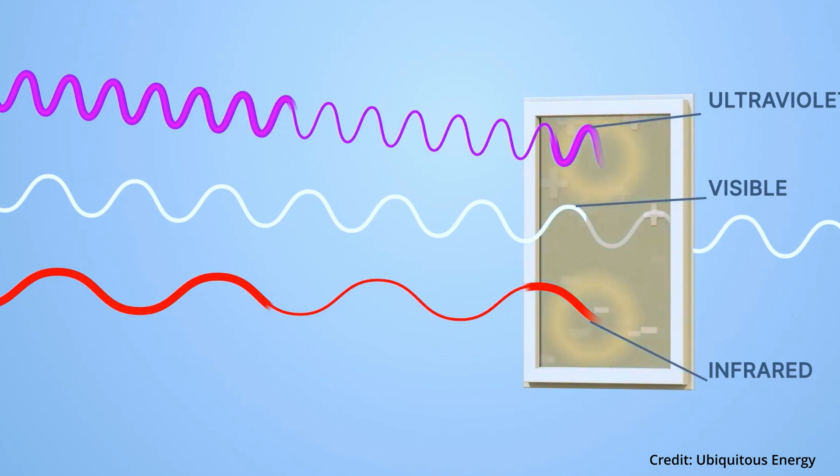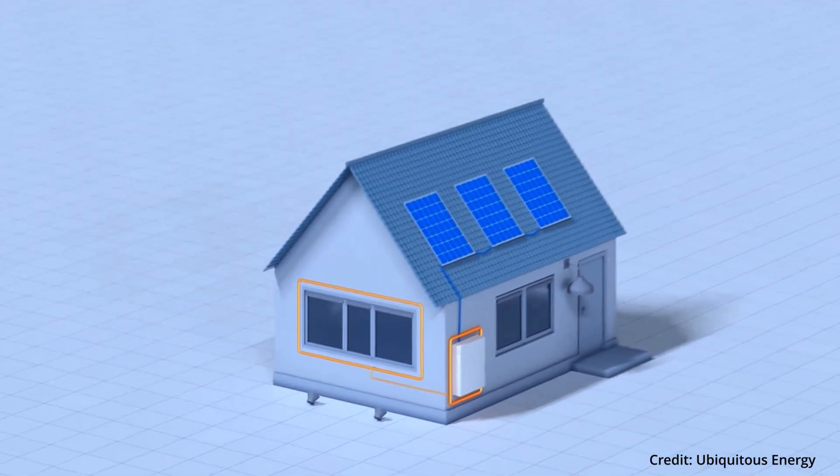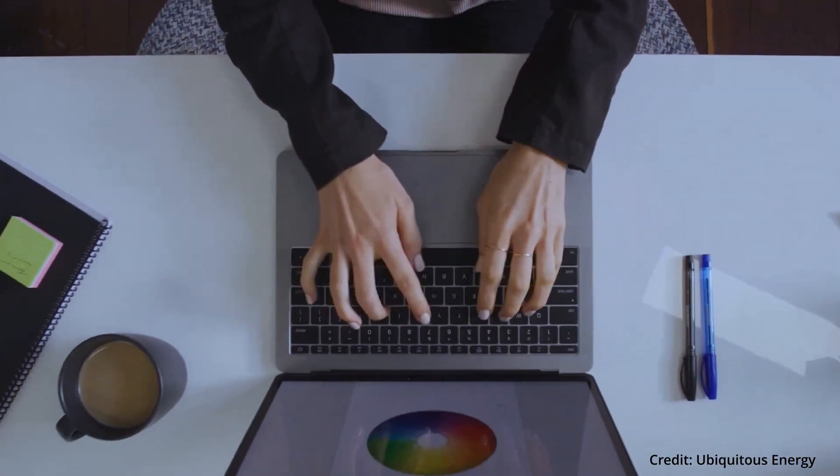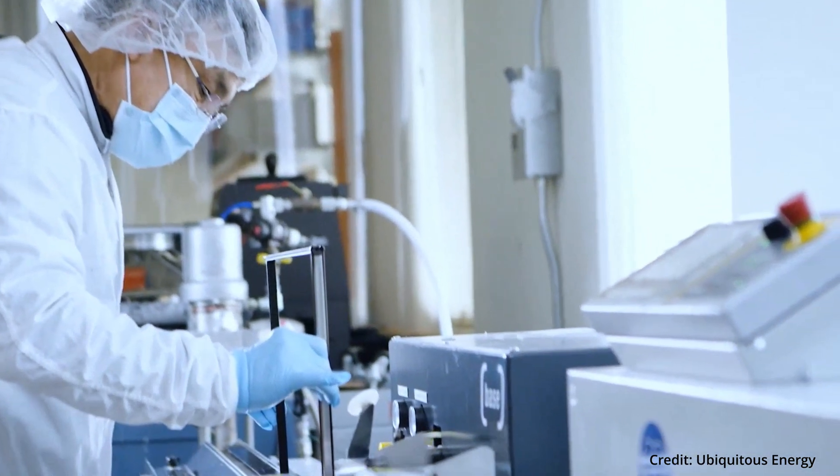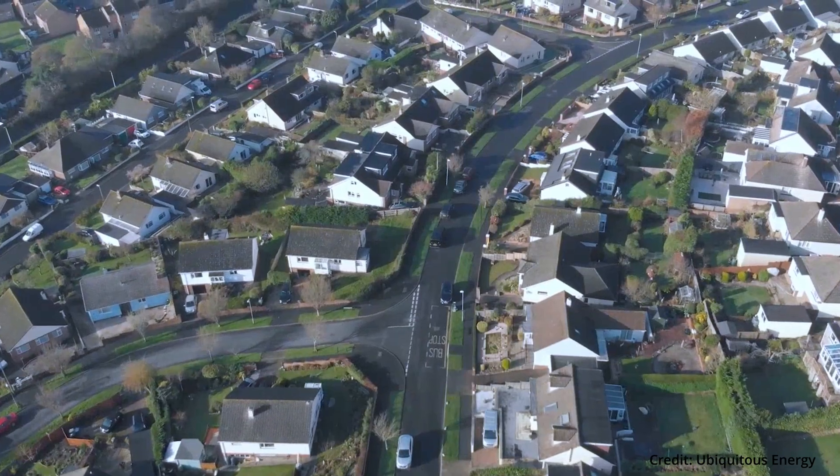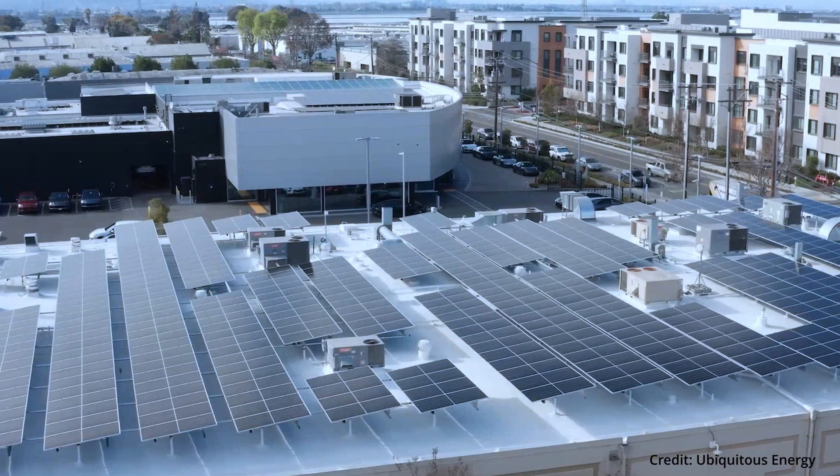They absorb ultraviolet and infrared light, which are types of light that aren't visible to the naked eye, and turn these into renewable electricity. The team of researchers at Michigan State University believe that solar windows and related transparent solar technologies could provide around 40 percent of energy demand in the United States, and combined with rooftop solar units, this could rise to almost 100 percent.